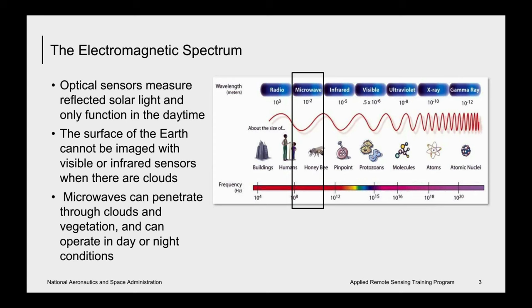There are advantages to observing the Earth's surface within the microwave range. Primarily, microwaves are not hindered by day or night, or most weather conditions, as optical sensors are.